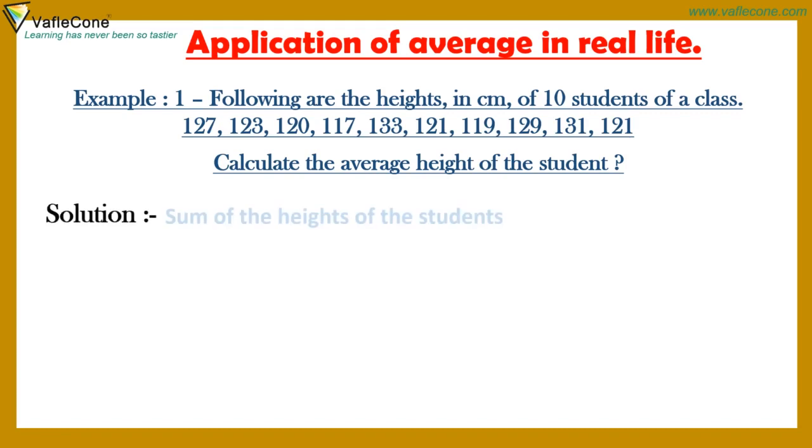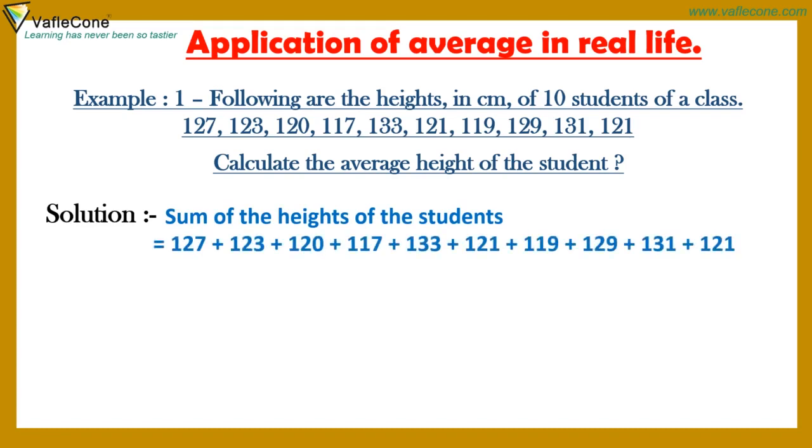Solution: Sum of the heights of the students equals 127 plus 123 plus 120 plus 117 plus 133 plus 121 plus 119 plus 129 plus 131 plus 121, which equals 1241. Number of students equals 10.